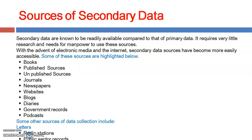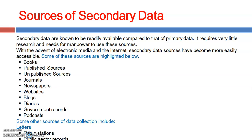Some sources of secondary data include: books, which are available in libraries, academic institutes, and different organizations; published sources and unpublished sources — even unpublished manuscripts or write-ups can be used; and journals, which are regularly written in different subject areas and are highly followed in research, providing guidance and results to researchers.